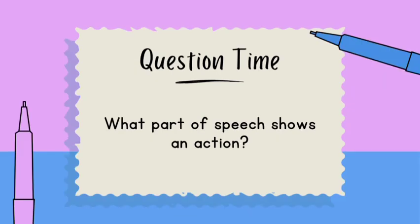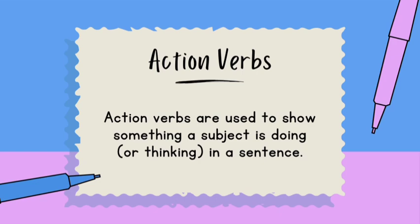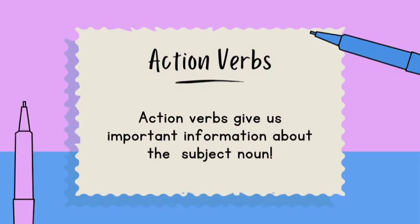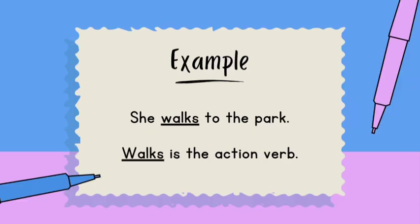First of all, do you know which part of speech shows an action? Action verbs are used to show something a subject is doing or thinking in a sentence. Action verbs give us important information about the noun. For example, 'she walks to the park' — 'walks' is the action verb.